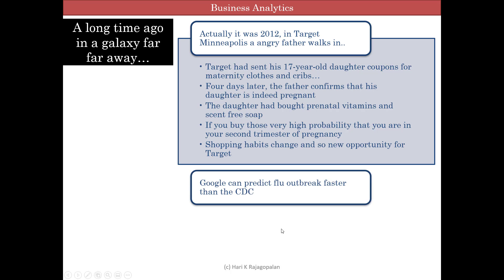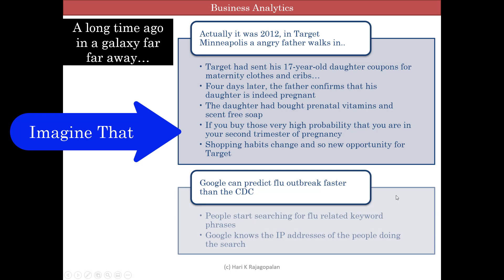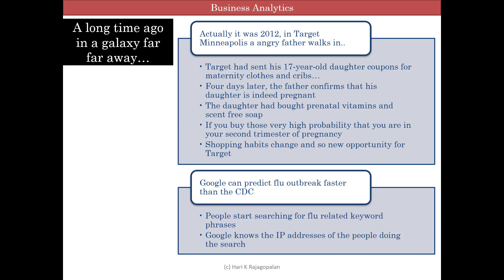Here is another example: Google can predict a flu outbreak faster than the CDC. The idea behind Google Flu Trends was that by monitoring millions of users' health-tracking behaviors online, the large number of Google search queries gathered can be analyzed to reveal if there was a presence of flu-like illness in a population. Google Flu Trends compared findings to historic baseline levels of influenza activity and reported activity as minimal, low, moderate, high, or intense. These estimates were consistent with conventional surveillance data collected by health agencies nationally and regionally. Google Flu Trends was discontinued in 2015 due to privacy concerns.